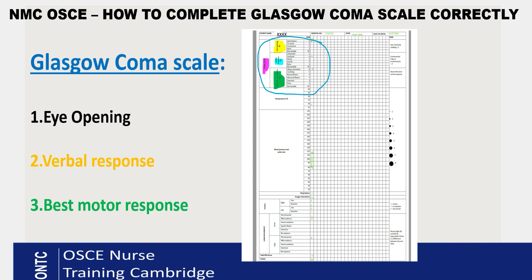So what does the Glasgow Coma Scale check? It's used for neurological patients to check their neurological status. There are three parts to it: the first is eye opening, the second is verbal response — how they respond verbally — and the third is the best motor response. These are the three main elements of the Glasgow Coma Scale, and they appear at the top of your neurological observation chart.